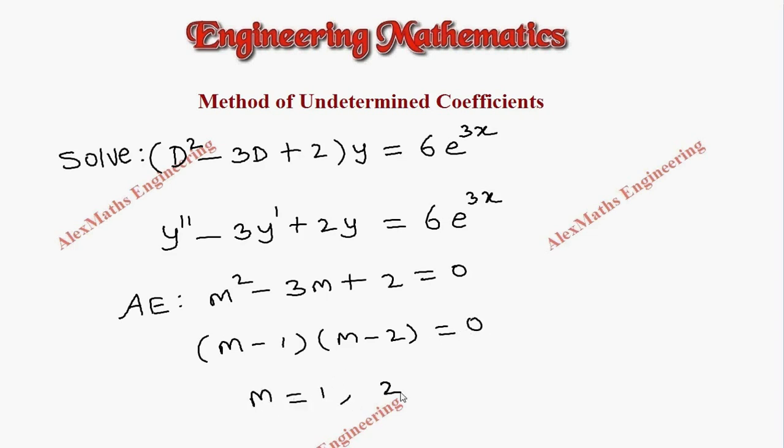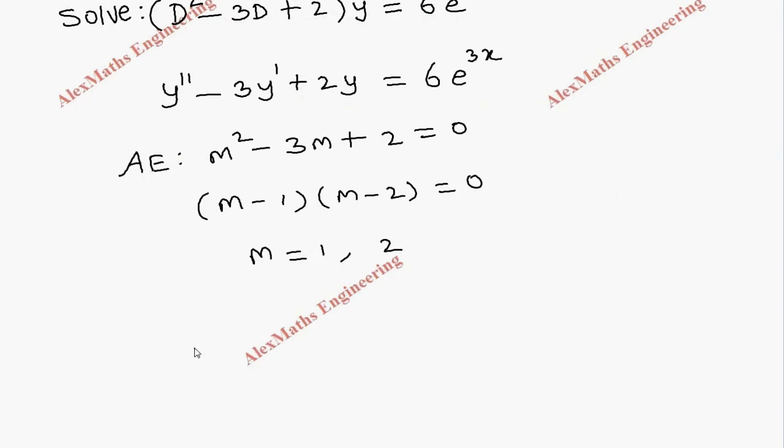So we get two values for m: one is 1, the other is 2. Using this we can write the complementary function. These are two different real values, so c₁e^x plus c₂e^2x.